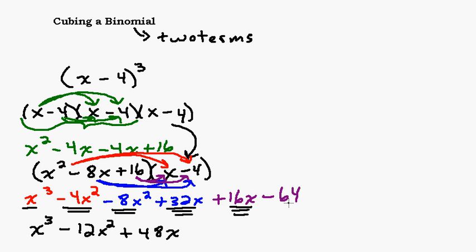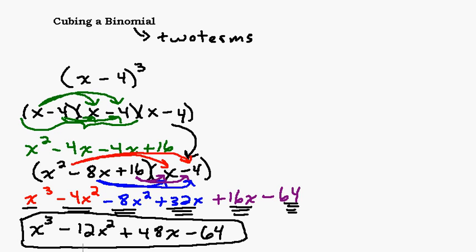Lastly, we've got the constant term, negative 64, and there's no other constant term, so just bring that down. There you have it. The answer is x to the third minus 12x squared plus 48x minus 64.